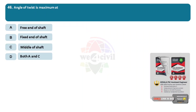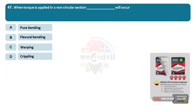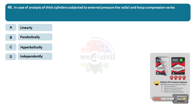Question 46: Angle of twist is maximum at? Options: A, free end of shaft. B, fixed end of shaft. C, middle of shaft. D, both A and C. Answer: Option A, free end of shaft. Question 47: When torque is applied in a non-circular section, dash will occur. Options: A, pure bending. B, flexural bending. C, warping. D, crippling. Answer: Option C, warping. Question 48: In case of analysis of thick cylinders subjected to external pressure, the radial and hoop compression varies? Options: A, linearly. B, parabolically. C, hyperbolically. D, independently. Answer: Option C, hyperbolically.